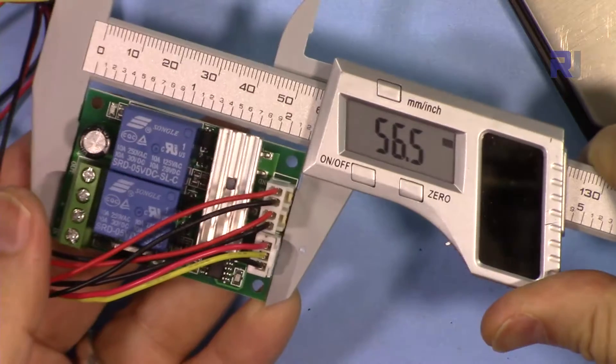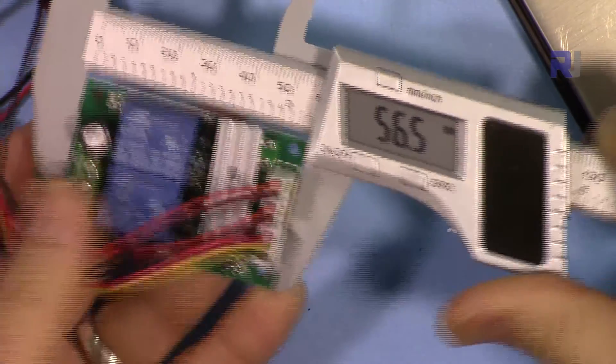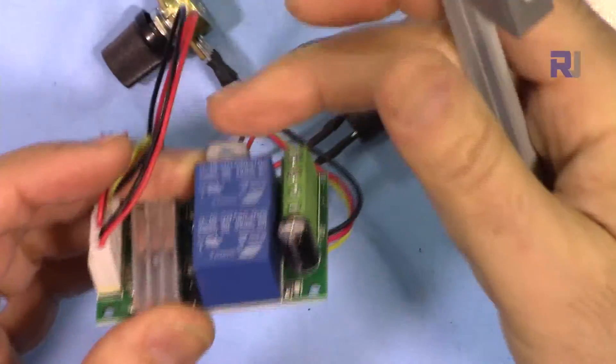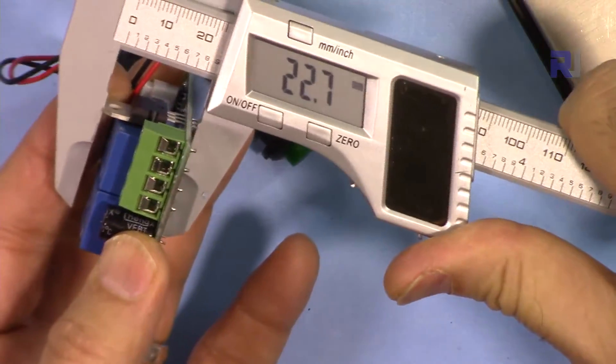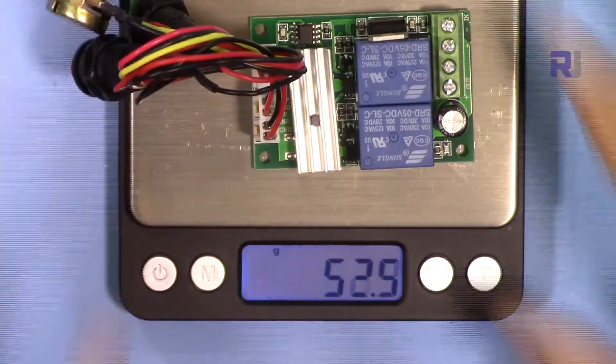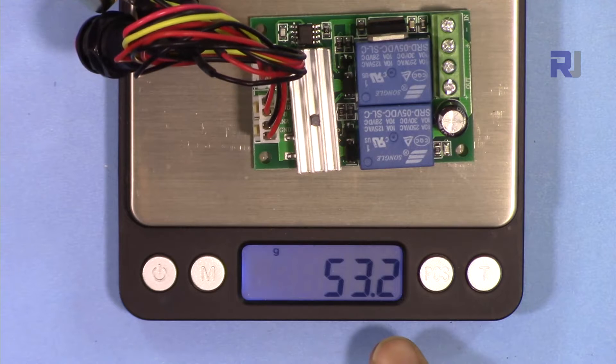Length of the module is 56.5 millimeters, the width is 37.1 millimeters. The height of the module is at that regulator which is 22.7 millimeters and if you're interested in weight it weighs 53.2 grams.